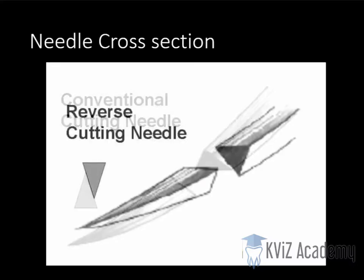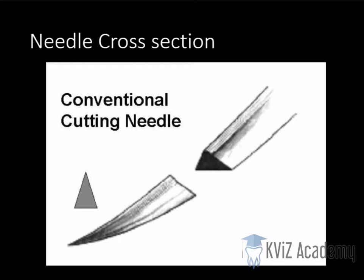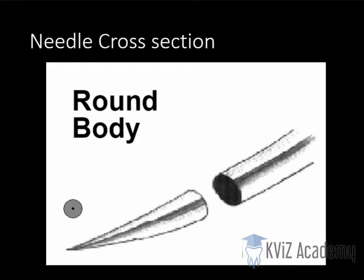Then we have reverse cutting, which has one cutting surface towards the outer curvature. Now, round body is not meant to cut through a structure — it is meant to pass through tissue which is easily perforated.